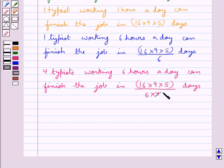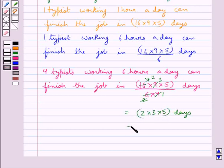Now 4 times is 16, 3 times is 9, 2 times is 6, 2 times is 4. So this is equal to 2 into 3 into 5 days, that is equal to 30 days.